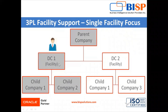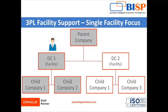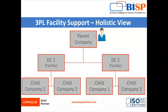Next is single facility focus for third-party logistic support. In this case you have one distribution center. For example, your business unit — let's say the Tata business unit — might be up here at the parent company level. Through this distribution center you may have Tata Motors as one child company and Tata Steel as another child company. All vehicle parts go under one company and all steel parts go under the other.